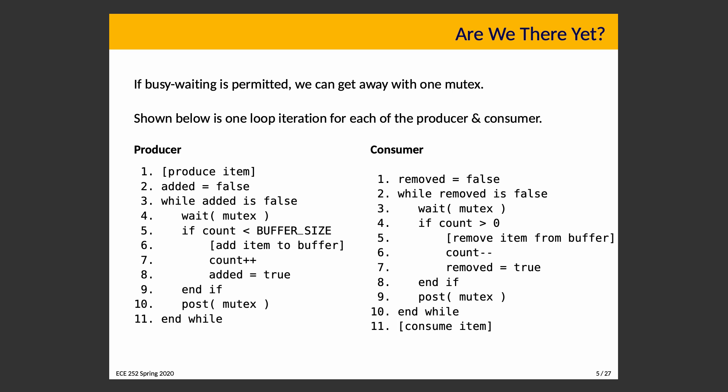This works if busy waiting is permitted — that is, it's allowed to waste a bunch of CPU time. If the buffer is empty, the consumer spends a lot of time in the while loop waiting on the mutex, checking if count is greater than zero, finding that it isn't, posting on mutex, and immediately waiting on it again to check if anything has happened. That's inefficient and we shouldn't like it.